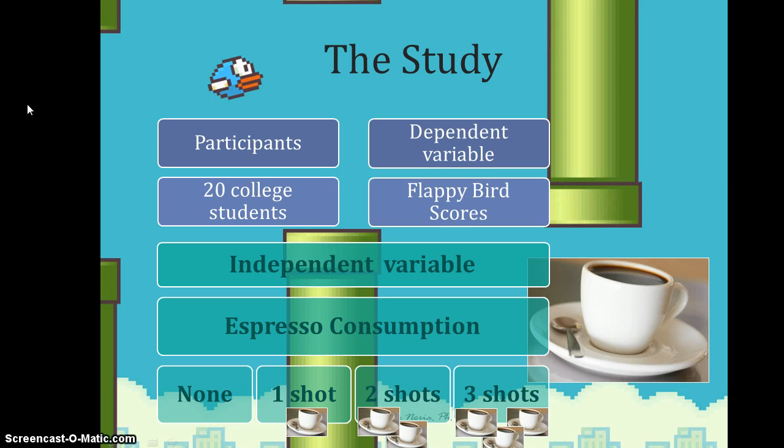The study that we are conducting has to do with whether or not students can do well playing Flappy Bird. Many of you probably have seen this if you have an iPad. I know that lots of students on campus are sometimes playing Flappy Bird. The participants are college students, there's 20 of them. Our dependent variable is the number of Flappy Bird levels somebody can complete before they die. And the independent variable is espresso consumption: no espresso, one shot, two shots, or three shots prior to playing the Flappy Bird game.